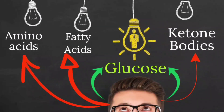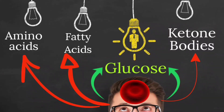Some tissues like the brain prefer glucose as the primary source of energy, but the brain can also use ketone bodies when glucose availability is reduced. Importantly, red blood cells (RBCs) use only glucose as their energy source — they cannot utilize any other source and require only glucose.